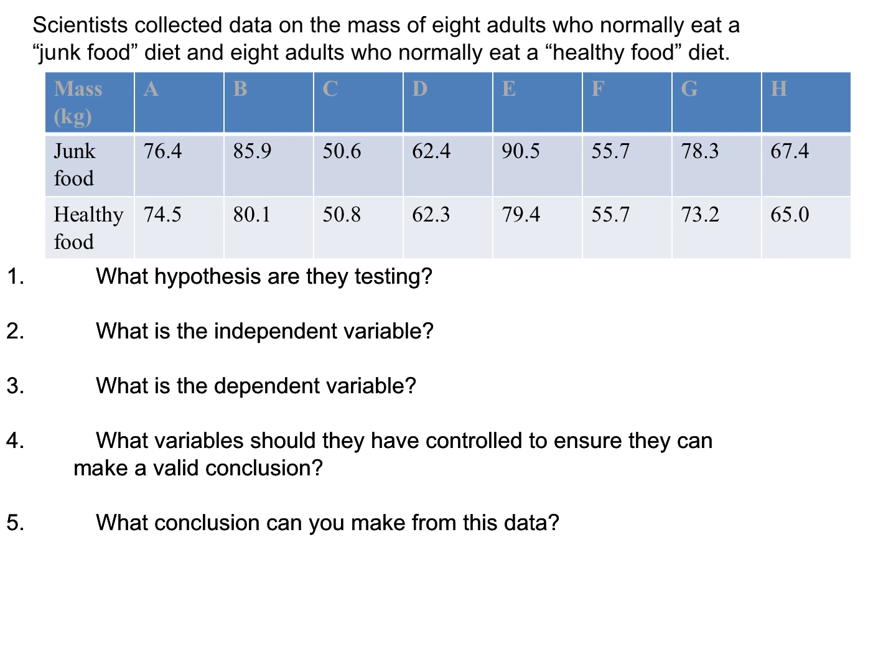At GCSE level, you might be asked: what hypothesis are they testing? They appear to be looking for a difference between the average mass of someone on a junk food diet versus a healthy food diet. You'd also be expected to identify the independent and dependent variable, and consider what other variables should be controlled so that only the diet affects the dependent variable. You might also be expected to draw a conclusion.